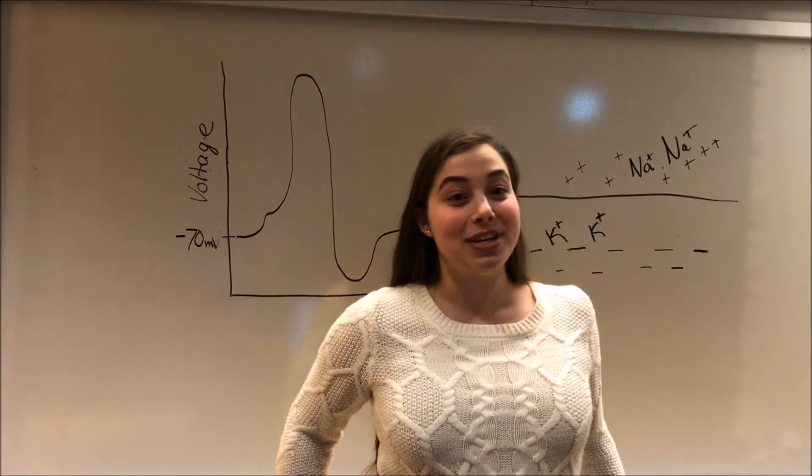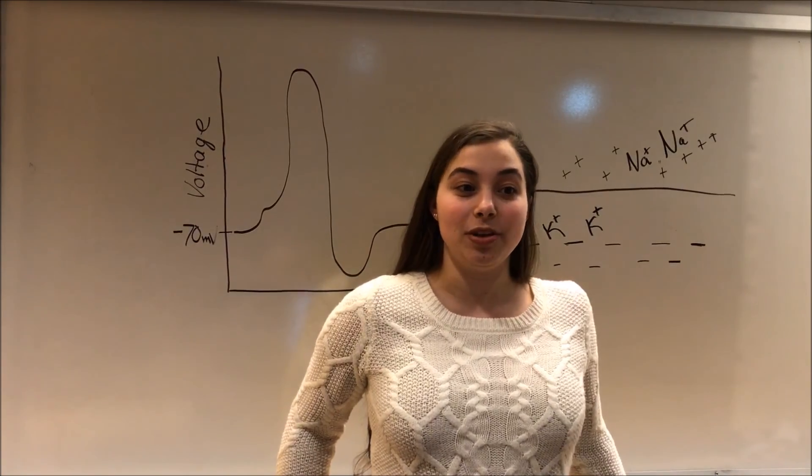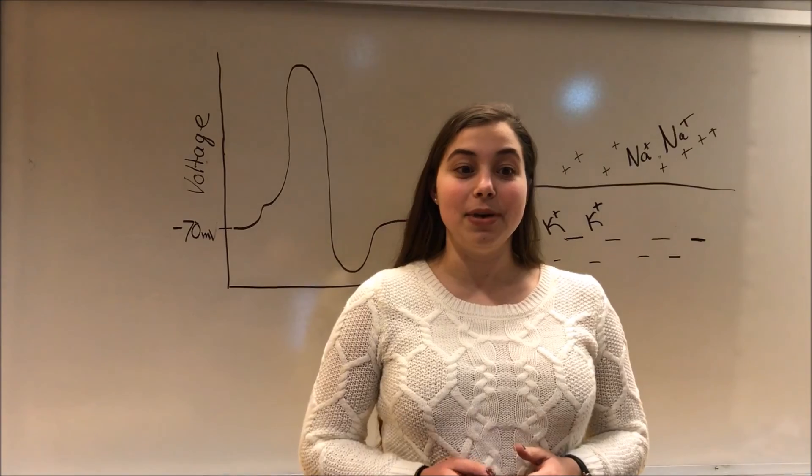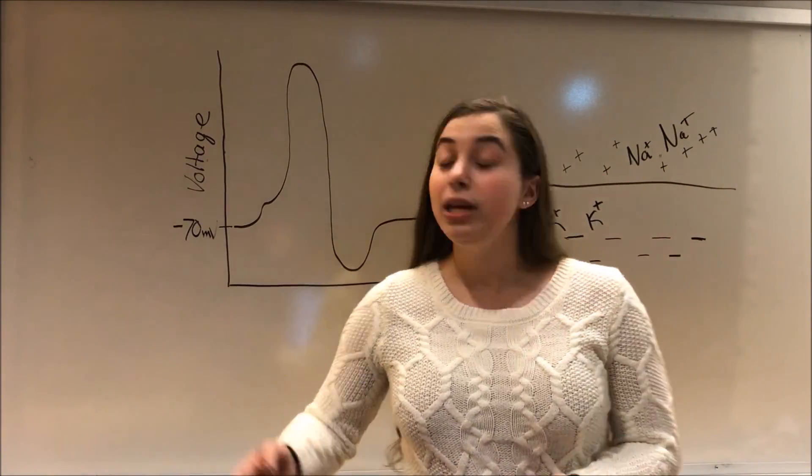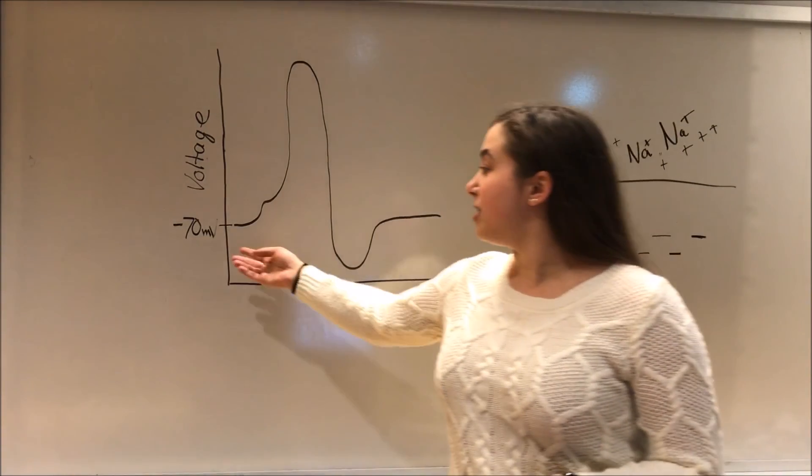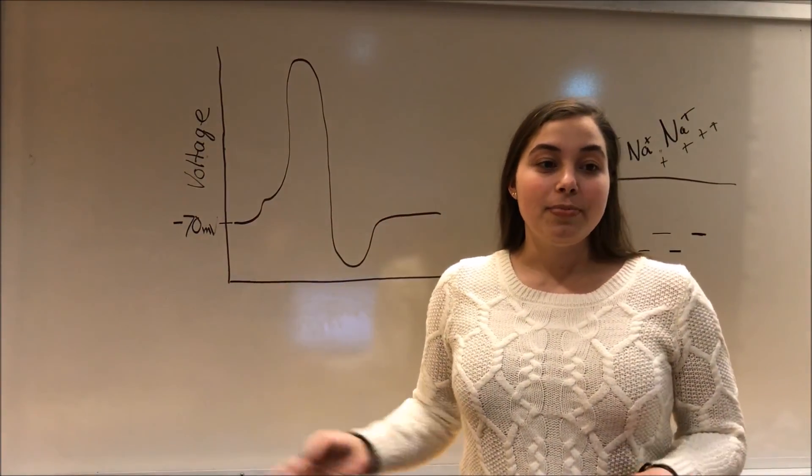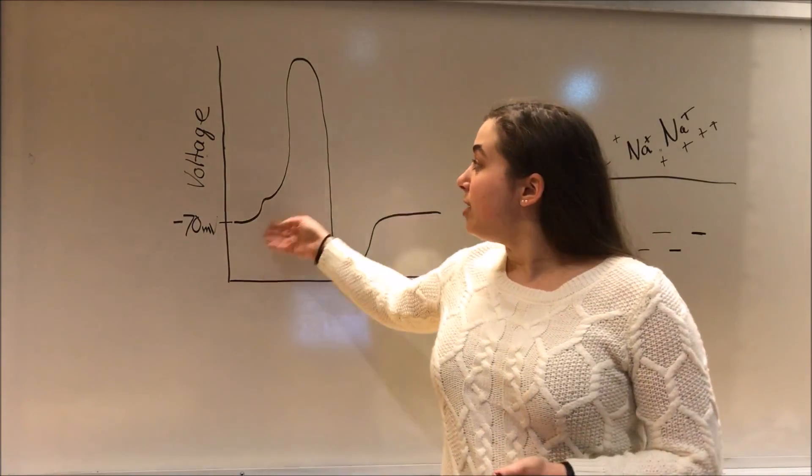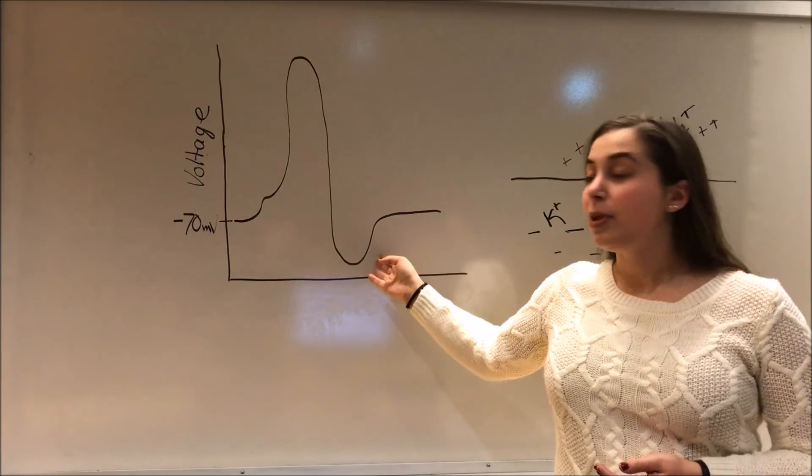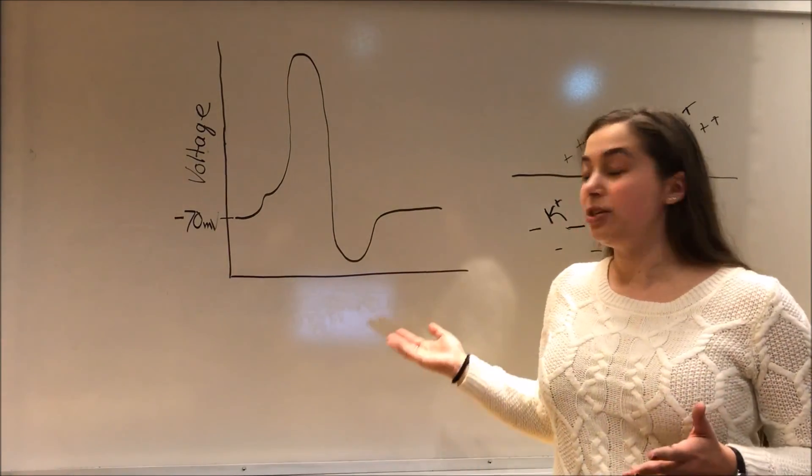Now that we've learned what action potentials are and what a neuron is like at rest, we can look at how an action potential happens. So, if we stuck a really small electrode inside of a neuron and measured the voltage during an action potential, it would look something like this. Normally, a neuron is at rest at about negative 70 millivolts. And there are three major steps to the action potential: depolarization, repolarization, and then hyperpolarization. So, we'll go through these steps individually and figure out how an action potential actually happens.